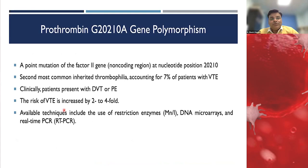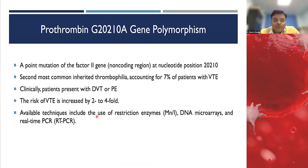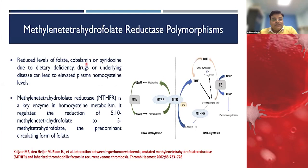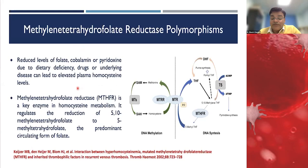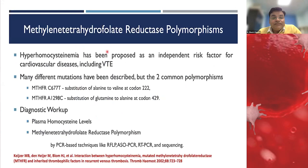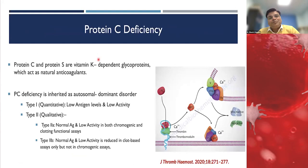Prothrombin gene mutation is the second most common inherited cause of thrombophilia; patients usually present with DVT and pulmonary embolism, with a 2 to 4 times increased risk compared to non-carriers. PCR-based methods are used for testing. MTHFR — methylenetetrahydrofolate reductase — polymorphism is also important, as this gene is necessary for homocysteine metabolism. This polymorphism has variable expression and can be detected by PCR methods; it is associated with increased plasma homocysteine levels.